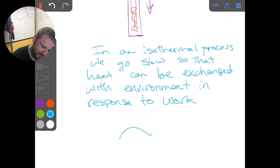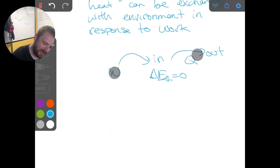So for instance, if we're compressing it, we do some work in, then we wait around so we have some Q out that equals, and we can have delta T equals, or change in the thermal energy equals zero for an isothermal process. Now if we go quickly, there's not room for Q to let that energy that we're adding to the system get out. So it all stays in.